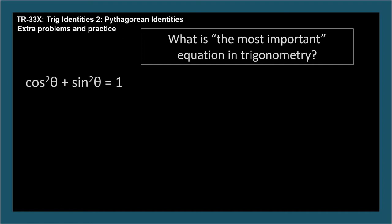Cosine squared theta plus sine squared theta equals 1. You can put cosine squared theta first or sine squared theta first. It doesn't matter.